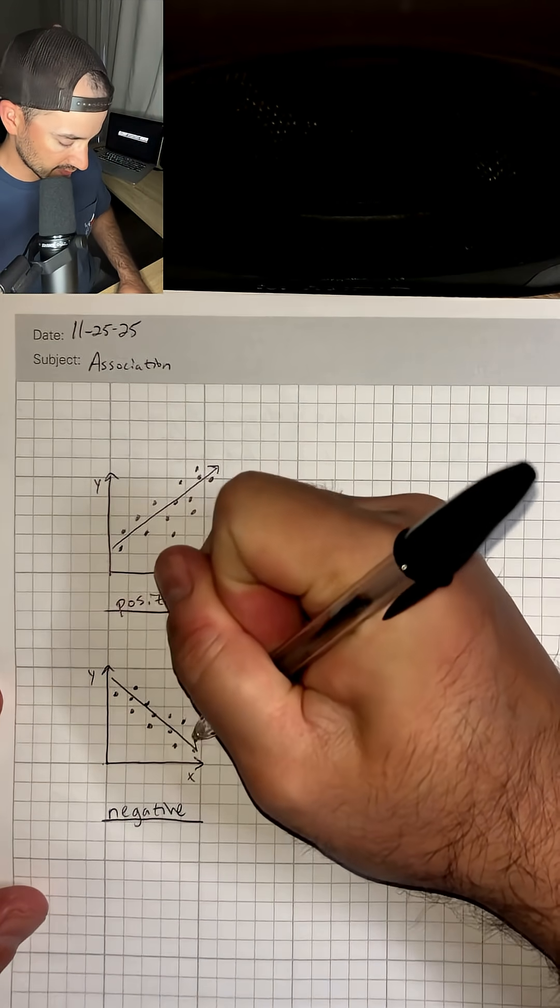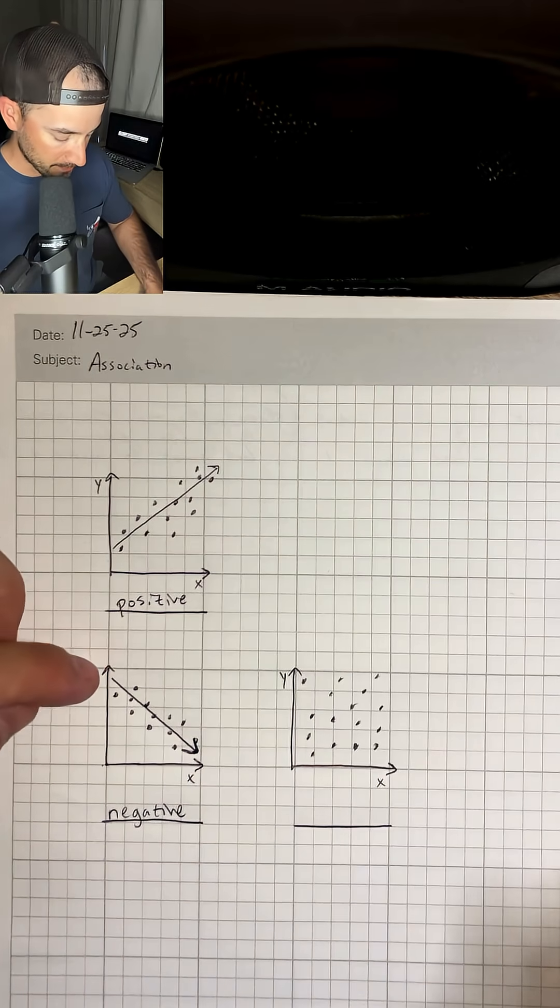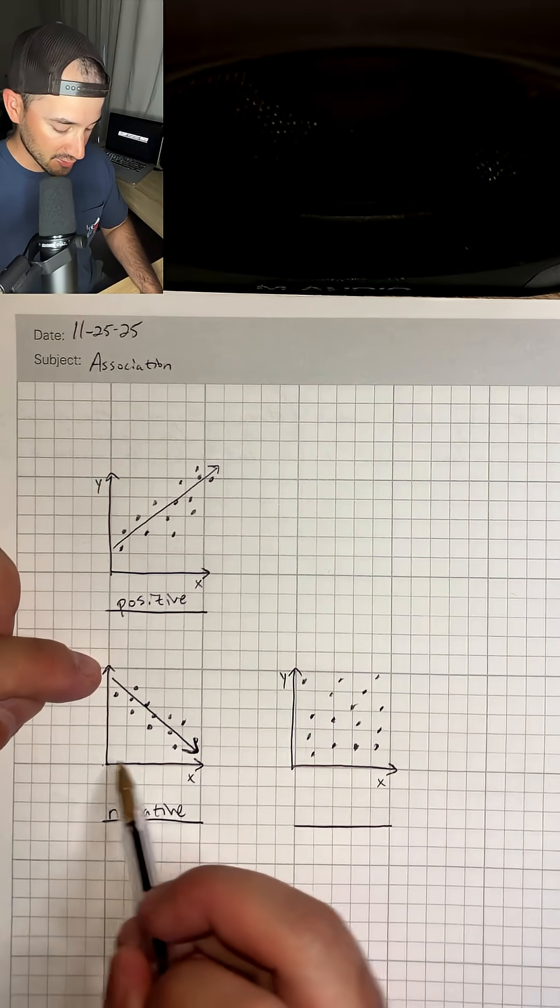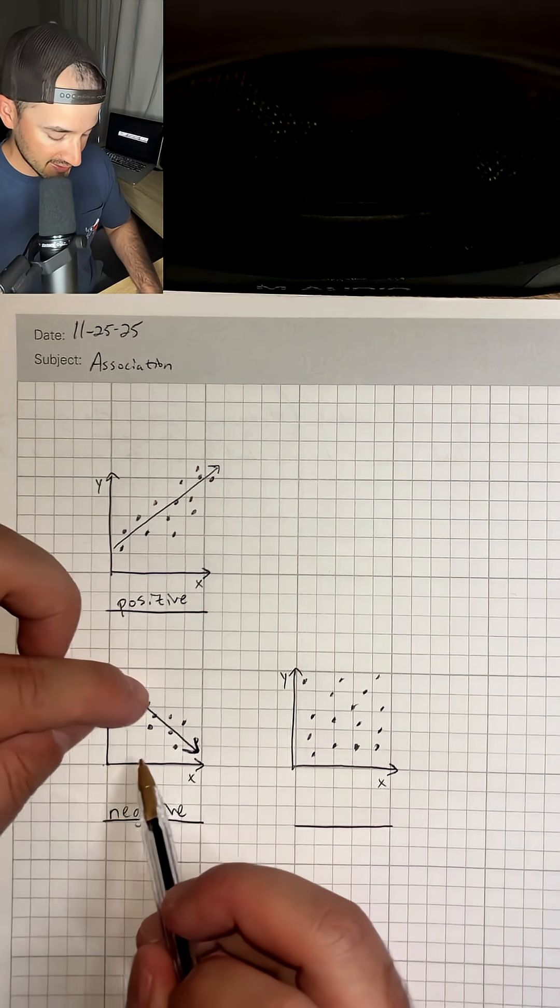Think of it as a negative slope, right? As we go from left to right or as X increases, Y is decreasing.